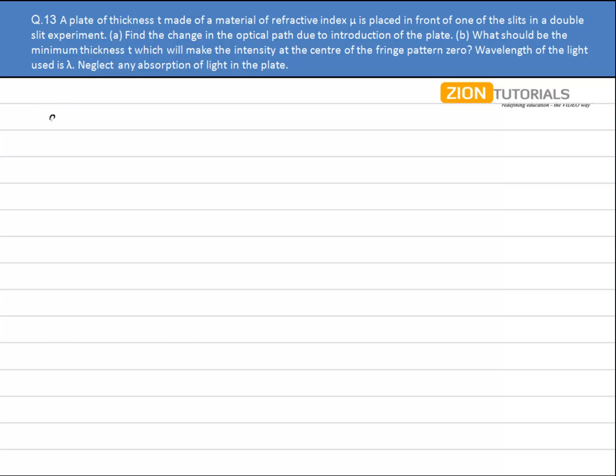This is a pretty clear question and a simple formula based one, because in the first part I just had to calculate the optical path due to the insertion of a slab of thickness t. That is a direct formula given by mu minus 1 into t, where mu is the refractive index of the plate.